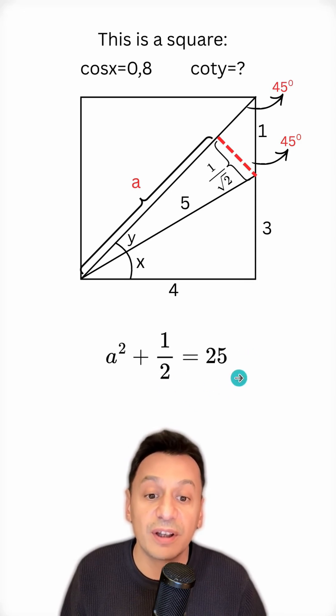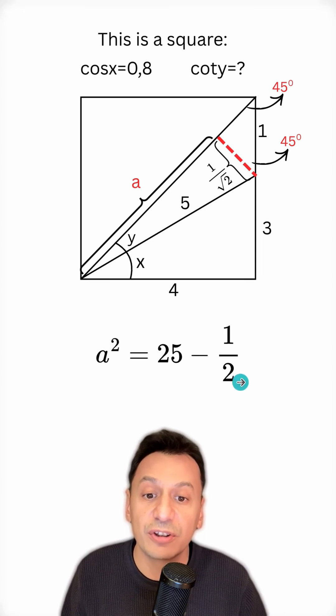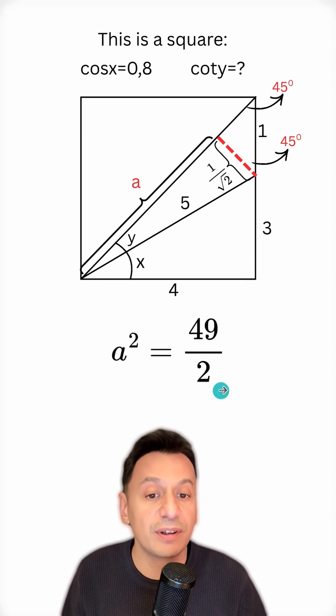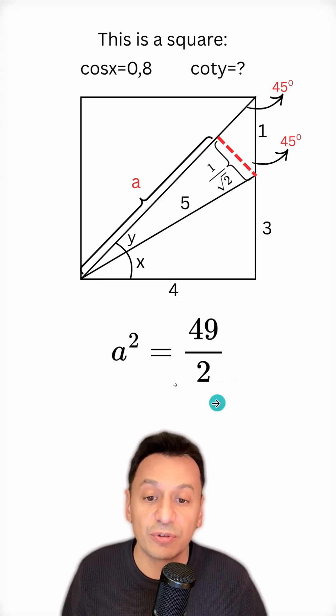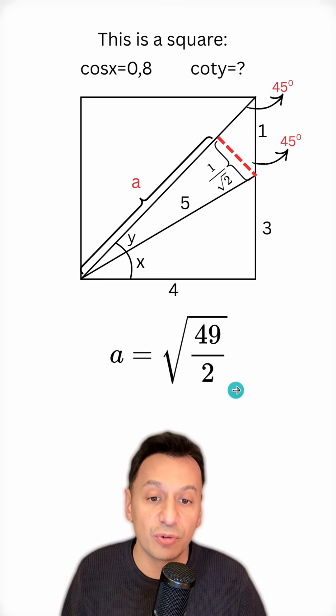I move the 1 half to the other side of the equation as a subtraction. Then I make the denominators equal. After that, I perform the subtraction. If a squared equals 49 over 2, then a will be equal to the square root of that.